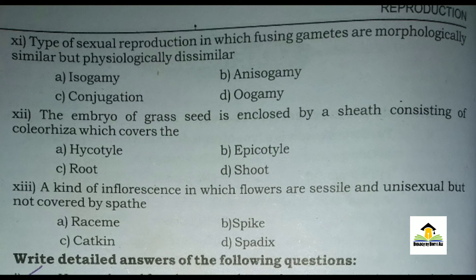The right answer for MCQ number twelve is C: root. MCQ number thirteen: A kind of inflorescence in which flowers are sessile and unisexual but not covered by spathe — A: raceme, B: spike, C: catkin, D: spadix. The right answer for this MCQ is C: catkin.